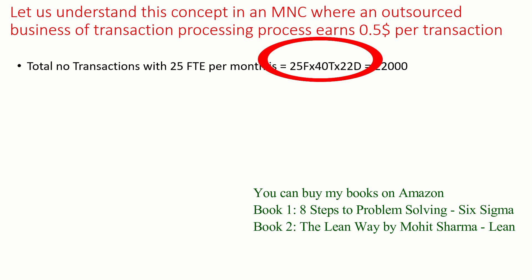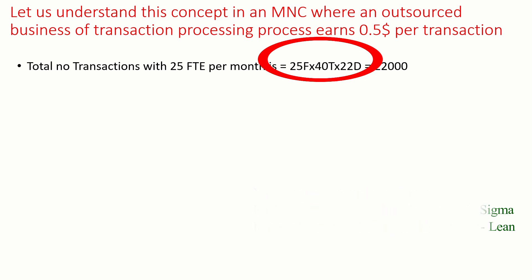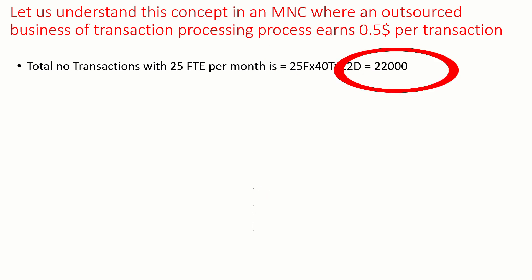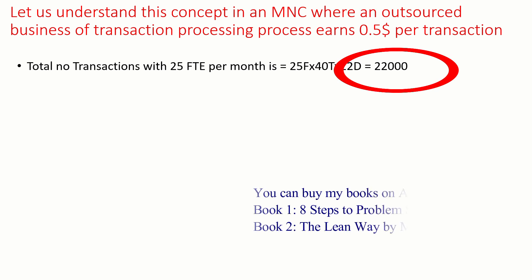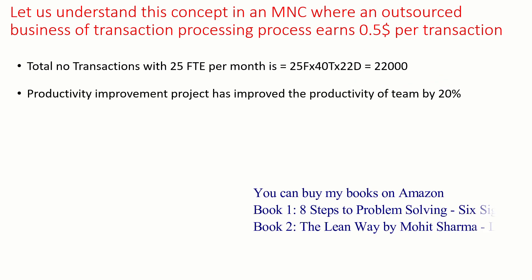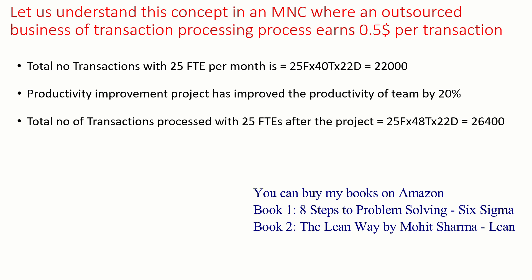25 full-time employees processing 40 transactions on average over 22 days gives us 22,000 transactions a month. The productivity improvement project improved the team's productivity by 20 percent. The total number of transactions processed with the same 25 full-time employees after the improvement is calculated keeping everything else the same — quality and every other parameter remains unchanged.